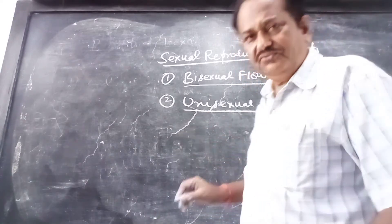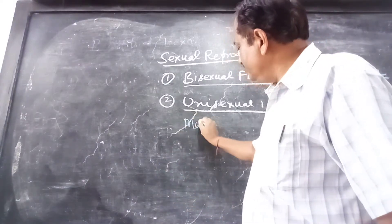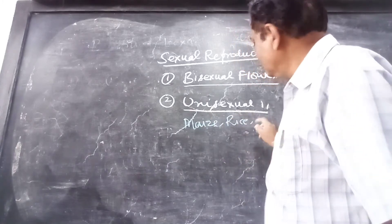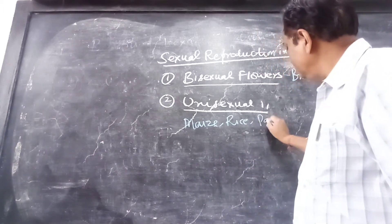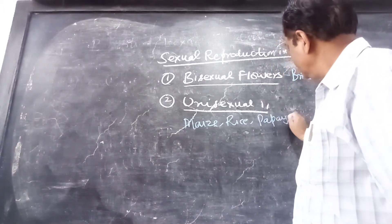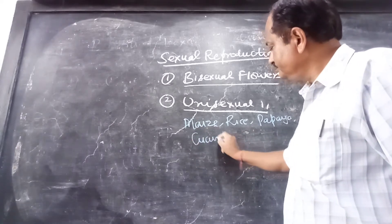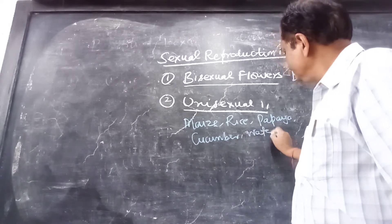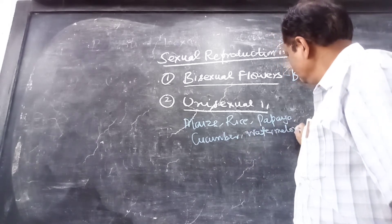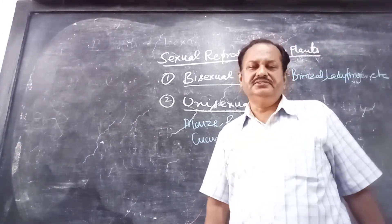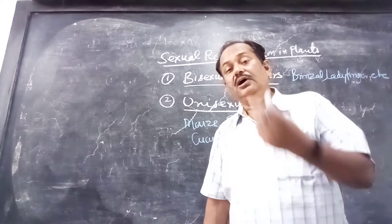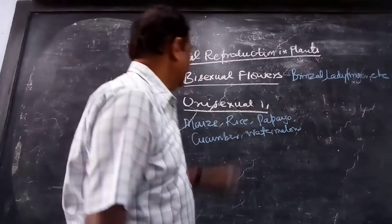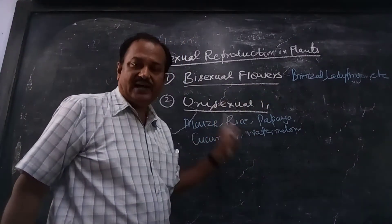There are very few plants that are unisexual, like maize, rice, papaya, cucumber, and watermelon. These plants have two different types of flowers on the same plant. This is the basic information about the types of flowers in plants.